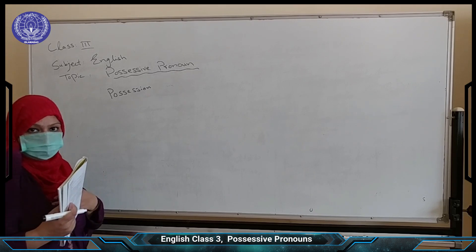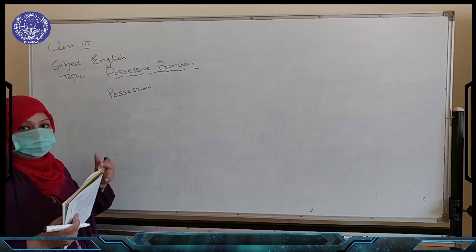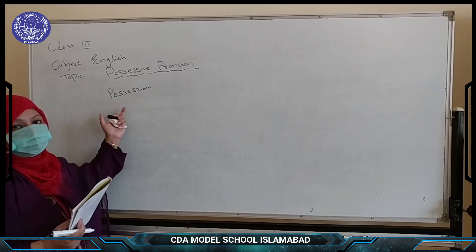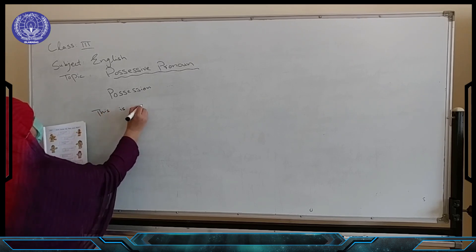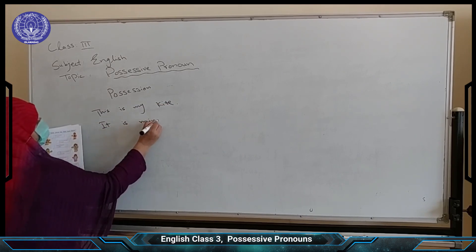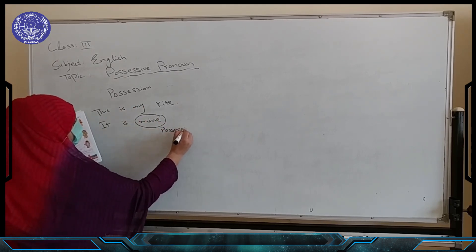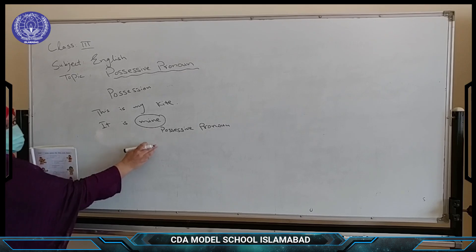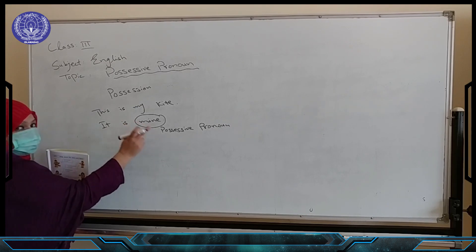For example, if I say: this book is mine. In this example, what is 'mine'? Mine is a possessive pronoun. Jo cheez aapki malqiyat ho, jo aapke paas koi cheez ho, go show kare — to wo pronoun kya kehlaata hai? Possessive pronoun. For example: it is mine. In this example, mine is a possessive pronoun. Why is it a possessive pronoun? Because it is showing your possession — it is mine.